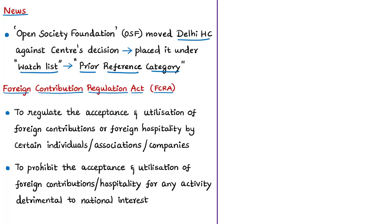The FCRA Act was enacted by the Indian Parliament to consolidate the law regulating two things: first, to regulate the acceptance and utilization of foreign contribution by certain individuals, associations, or companies; and second, to prohibit acceptance and utilization of foreign contribution or foreign hospitality for activities detrimental to national interest.